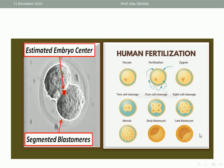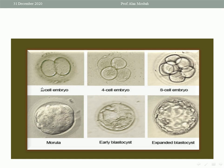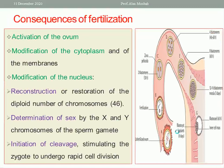Under the microscope: two-cell embryo, four-cell embryo, eight-cell stage, morula, early blastocyst, late blastocyst. The consequences of fertilization include three important parts: activation of the ovum with modification of the cytoplasm and membrane; modification of the nucleus — meaning restoration of the diploid number of 46 chromosomes; determination of sex by the X or Y chromosomes of the sperm; and initiation of cleavage, stimulating the zygote to undergo rapid cell division.